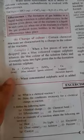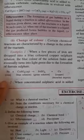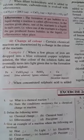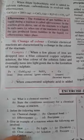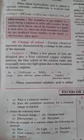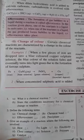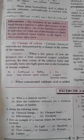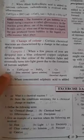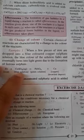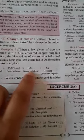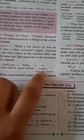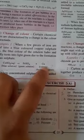The second property is change of color. Certain chemical reactions are characterized by a change in the color of the reactant. Simple example: when a few pieces of iron are dropped into blue colored copper sulfate solution, the blue color of the copper sulfate solution fades and turns into light green due to formation of ferrous sulfate and a brown-red deposit of copper.